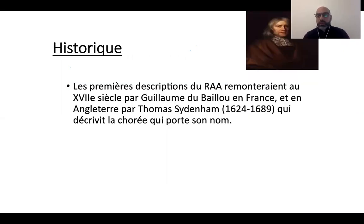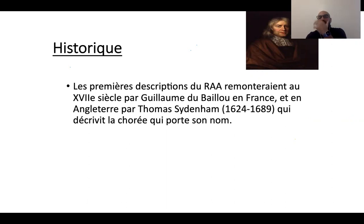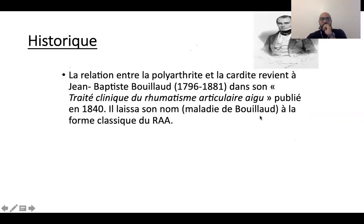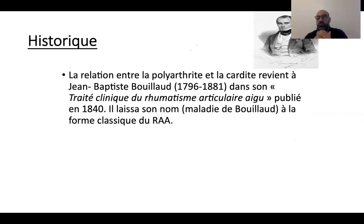L'historique : la première description remonterait au XVIIe siècle, lorsque Guillaume Bayou en France et Thomas Sydenham ont décrit les premiers signes — Sydenham a notamment décrit la chorée. Mais c'est Jean-Baptiste Bouillaud qui va écrire un traité du rhumatisme articulaire aigu, en 1840. D'ailleurs, pour certains, on l'appelle encore la maladie de Bouillaud. Il faut toujours écrire et publier ses observations cliniques.